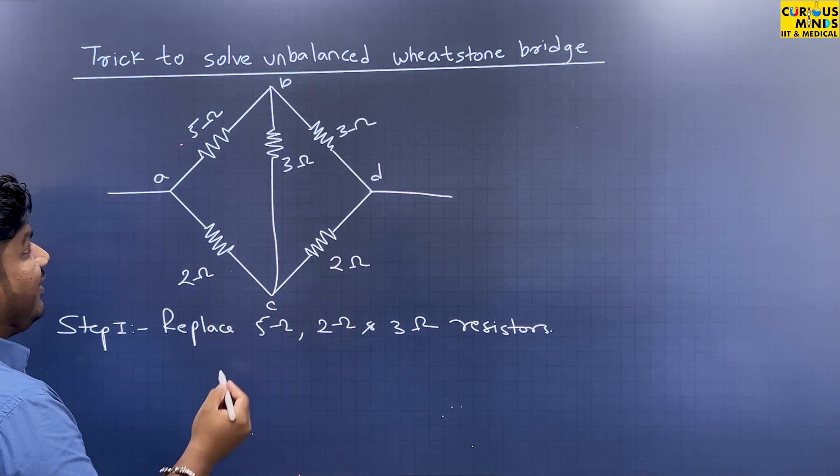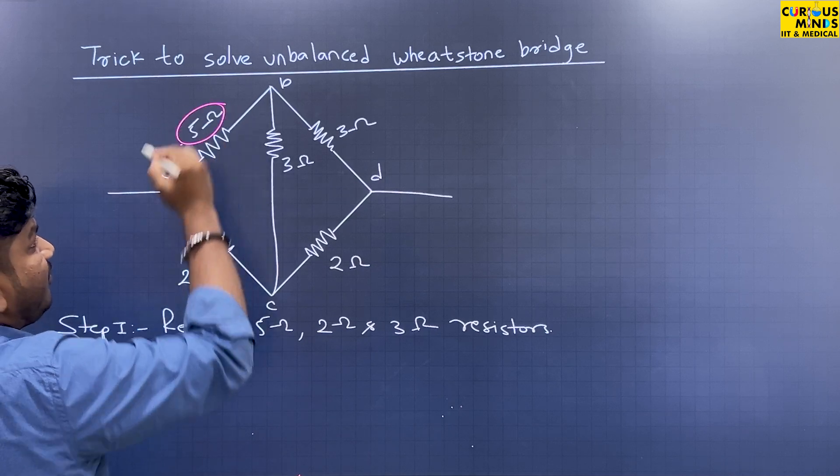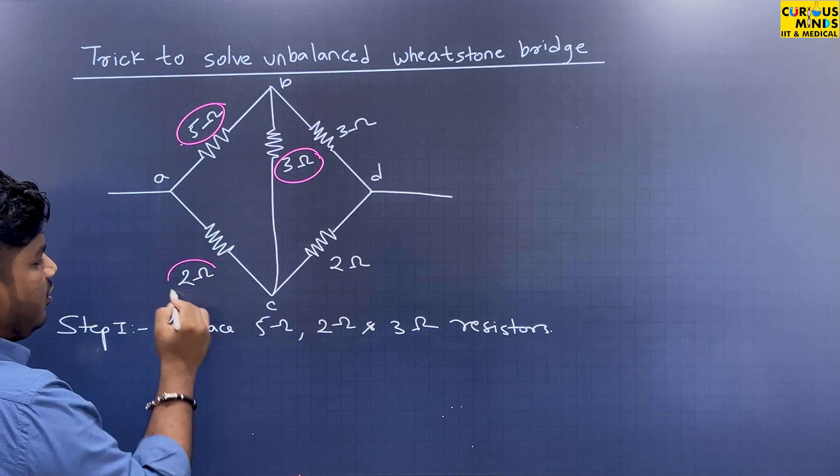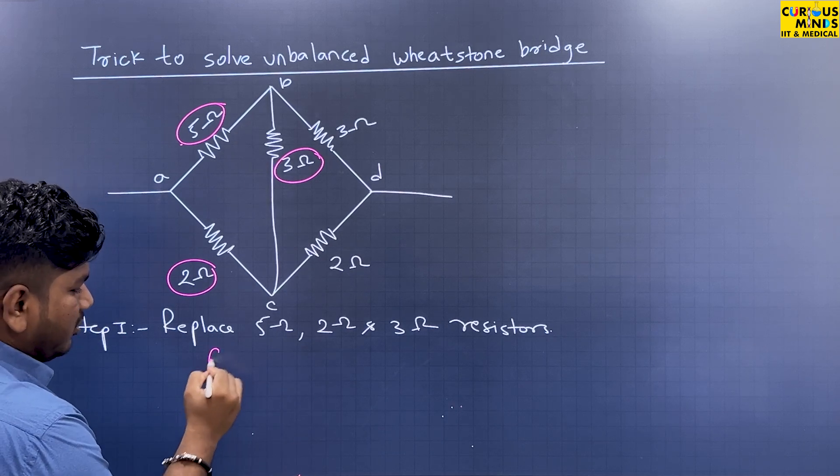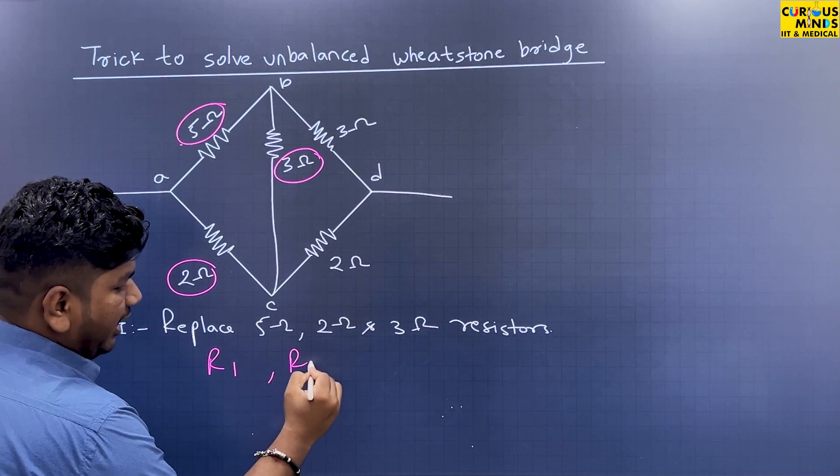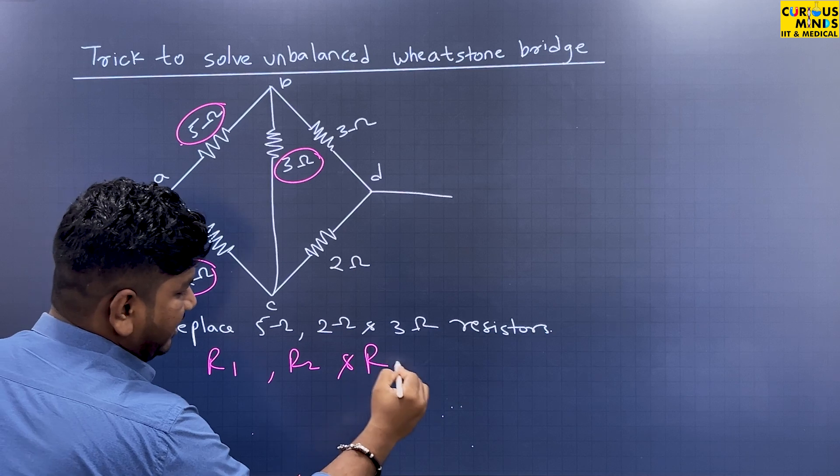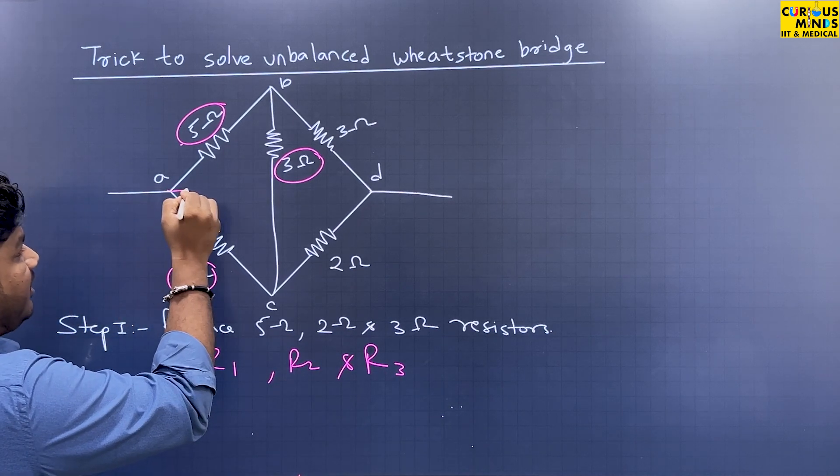So what we're going to do is take the 5, 3, and 2 ohm resistances and replace them with new resistances called R1, R2, and R3. So let me draw them.